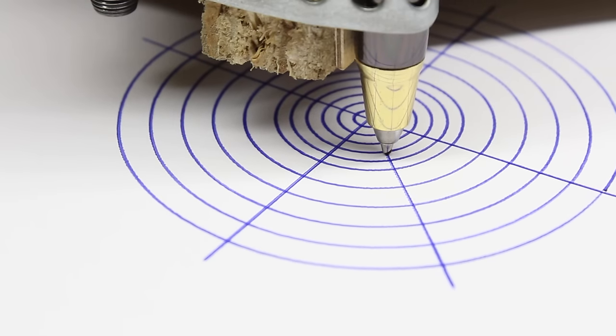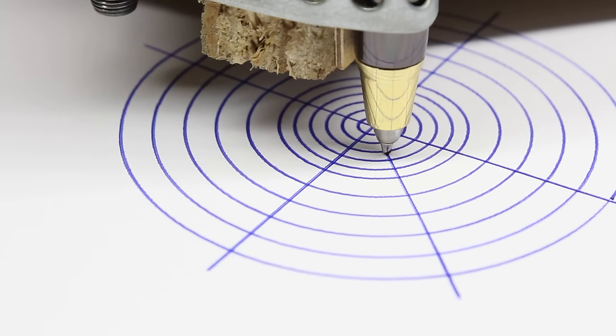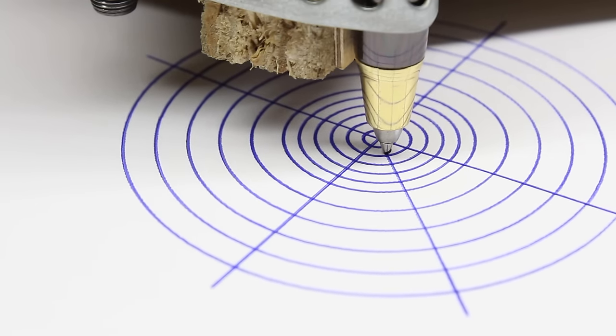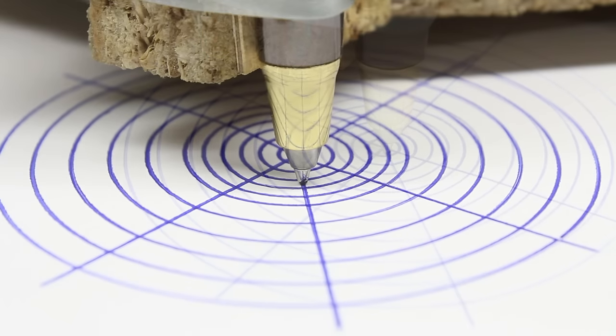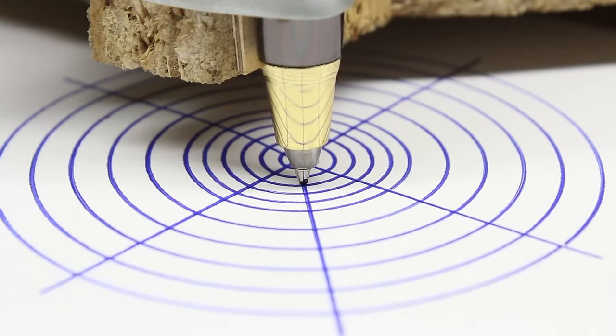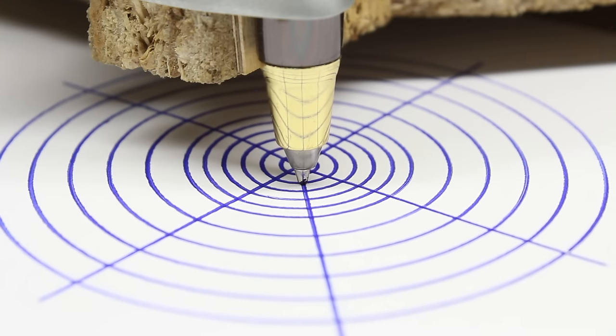The advantage of the higher resolution is visible when plotting the diagonal lines of the test pattern. The movement is less waved.